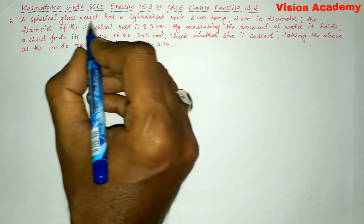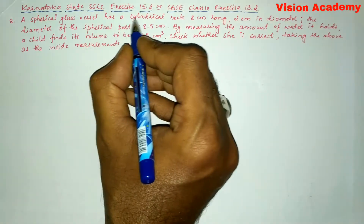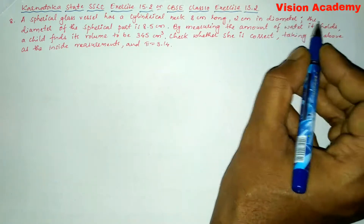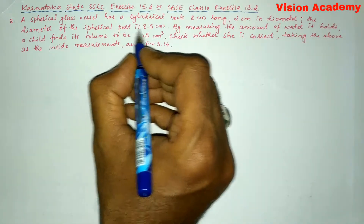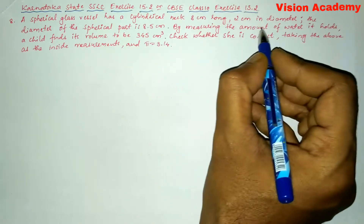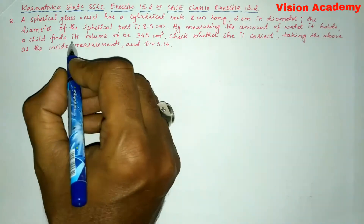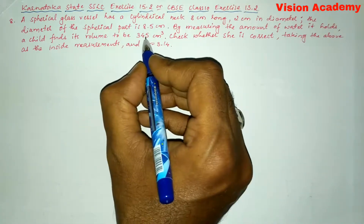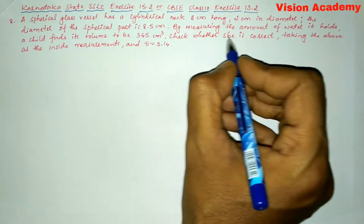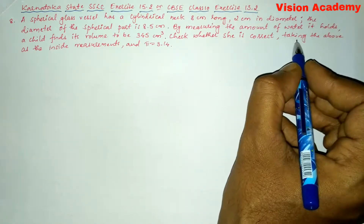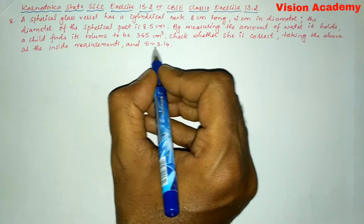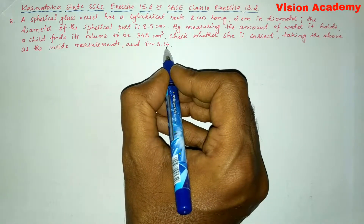Question number 8. A spherical glass vessel has a cylindrical neck 8 cm long, 2 cm in diameter. The diameter of the spherical part is 8.5 cm. By measuring the amount of water it holds, a child finds its volume to be 345 cm³. Check whether she is correct, taking the above as inside measurements and pi equal to 3.14.